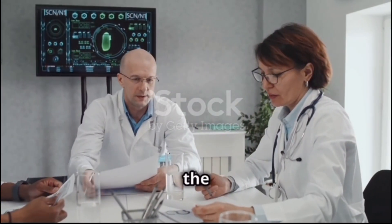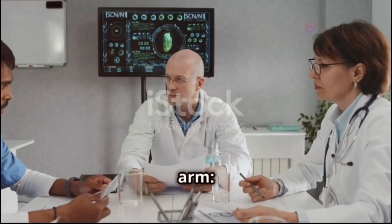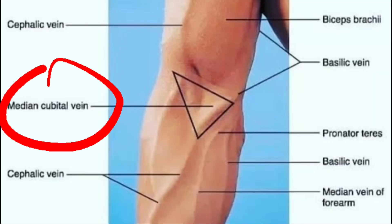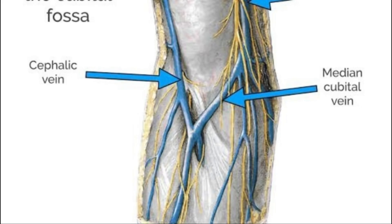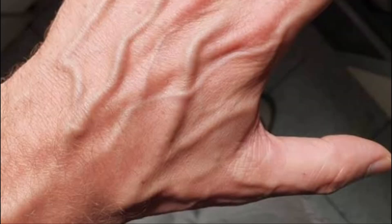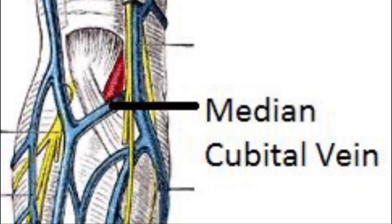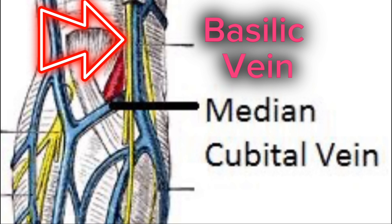To recollect the order of preference while putting in an intravenous cannula in the arm: first choice is the median cubital vein, second choice is the cephalic vein. If neither of those two seem accessible, then try any vein on the back of the hand. And remember, the basilic vein is always the last choice due to its proximity to the brachial artery and median nerve.